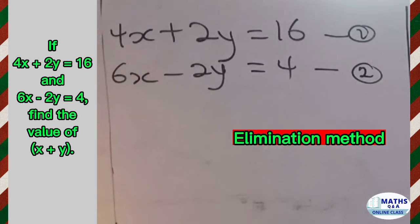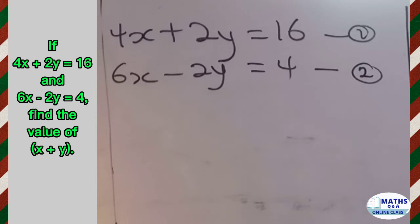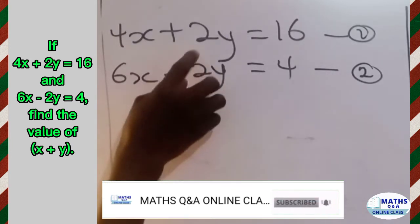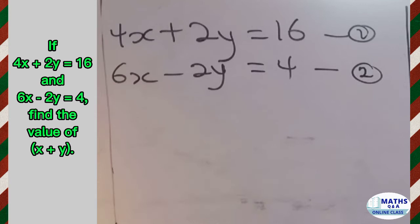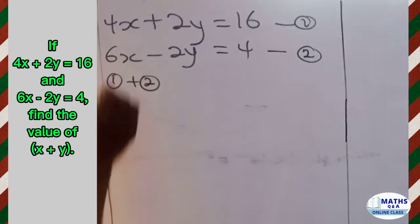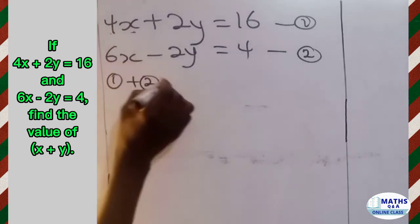The elimination method says that to eliminate one variable, you make sure the numbers multiplying that variable are either the same or exact opposites. If they are the same, you subtract. If they are exact opposites, you add. We have positive 2 and negative 2 — they are exact opposites — so we will add equation 1 to equation 2.